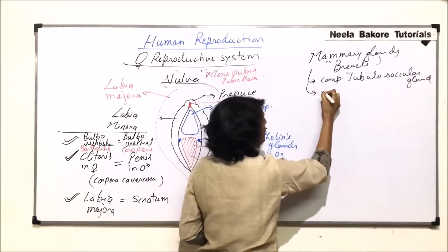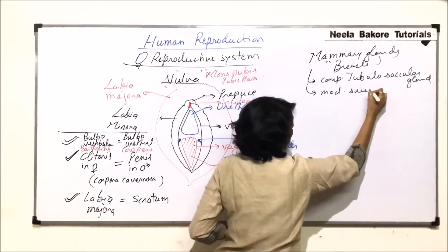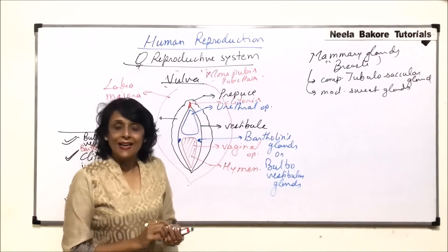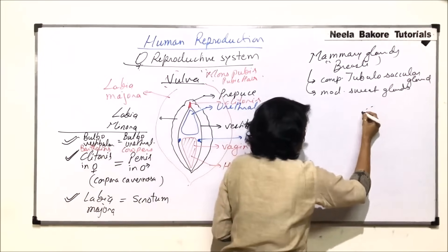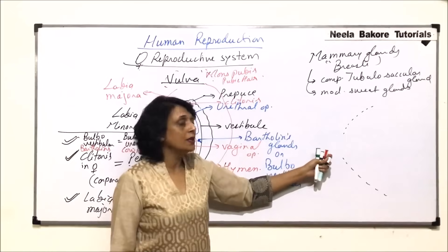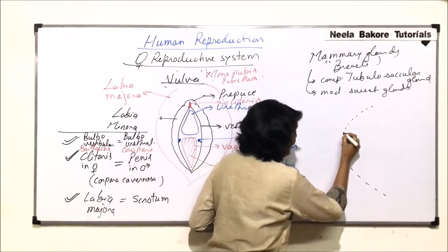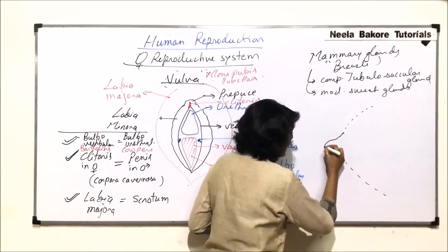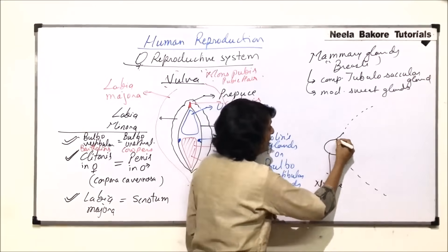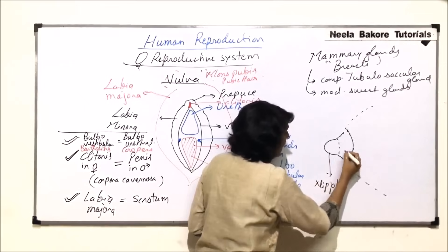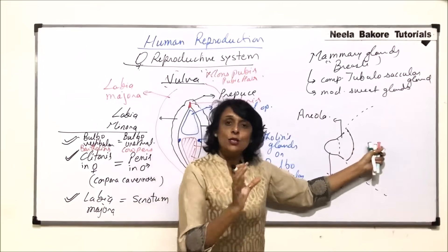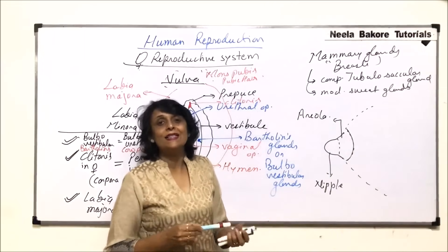The mammary glands, commonly known as breasts, are compound tubuloalveolar glands and are modified sweat glands. There are glands called lactiferous glands which open into the breast structure. The bulging part seen in the thoracic region is the breast. The anterior part has an erectile part known as the nipple, and just behind the nipple there is a dark pink area known as the areola.